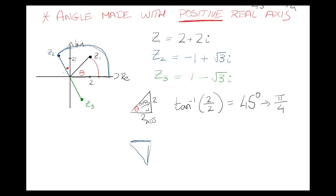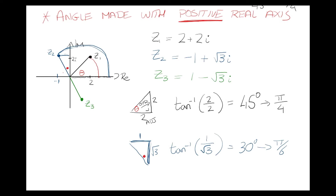For z2, the triangle is made with the imaginary axis. The complex number is minus 1 across — so a length of 1 back — and root 3 up on the imaginary axis. So the triangle has a horizontal side of 1 and a vertical side of root 3. Tan inverse of opposite over adjacent is 1 over root 3, giving 30 degrees or pi over 6.